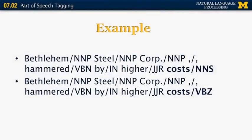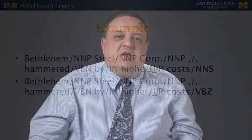Another possibility is to consider the previous word. What is the probability that 'costs' is a noun given the previous word is 'higher'? Clearly, after an adjective we're more likely to see a noun than a verb. A third model looks at the part of speech of the previous word rather than the word itself — pick whatever interpretation is consistent with the previous word being an adjective. So we have: a unigram model, a bigram model based on words, and a bigram model based on the current word and the POS of the previous word.